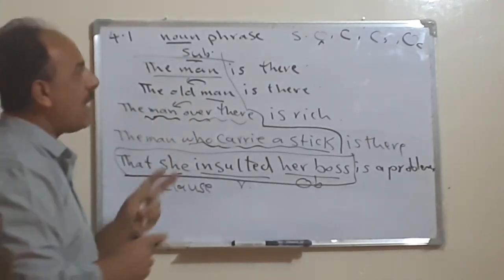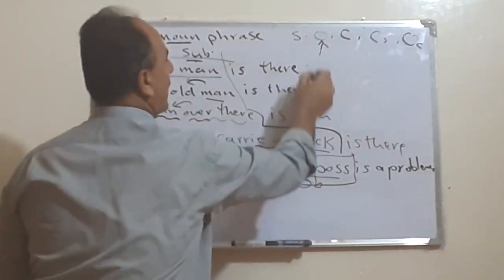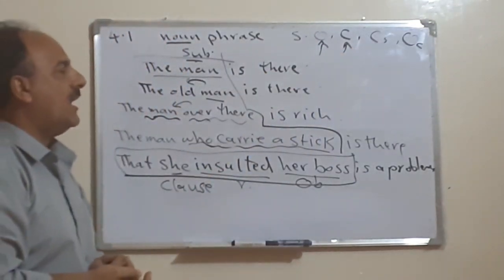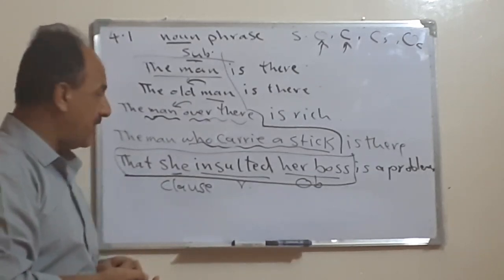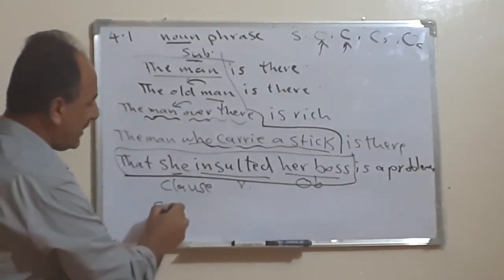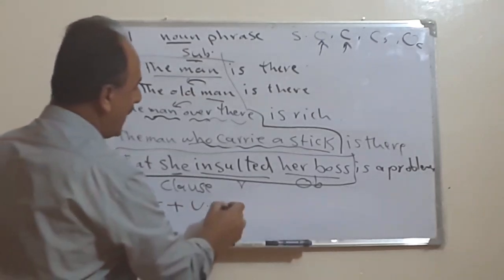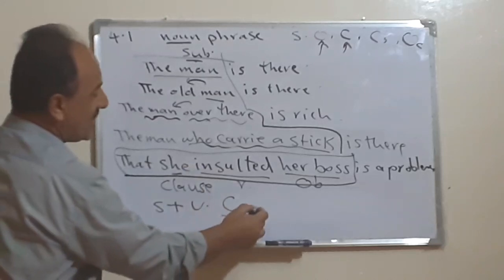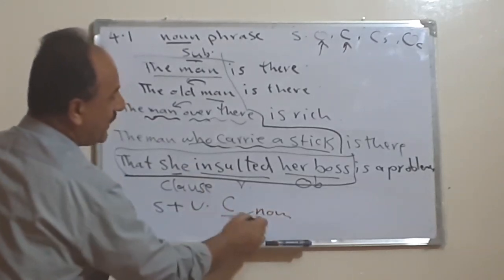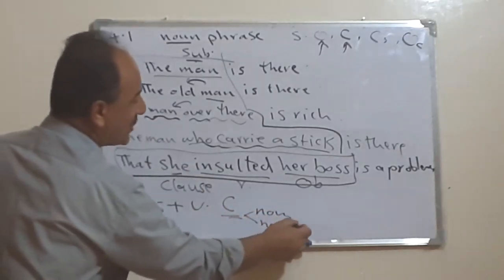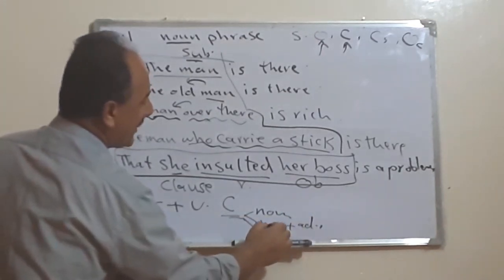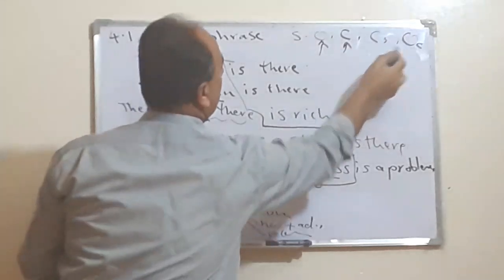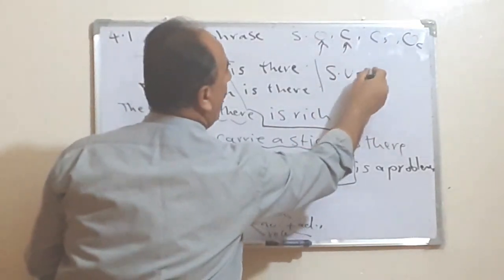So all these things applicable to the object, applicable to the subject complement, applicable to the object complement. Means if we have, for example, subject plus verb plus complement, this complement could be just a noun or could be noun with adjective, could be relative clause, etc. And if we have here, for example, subject with verb with object.